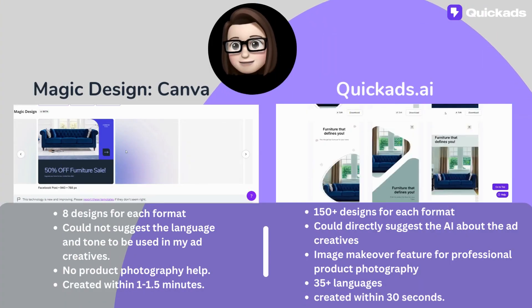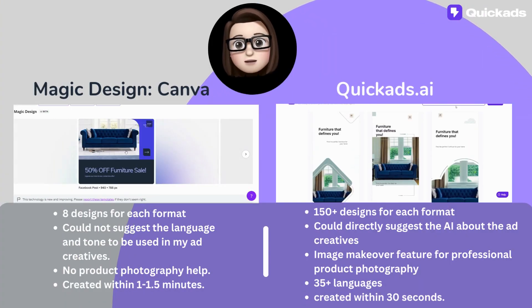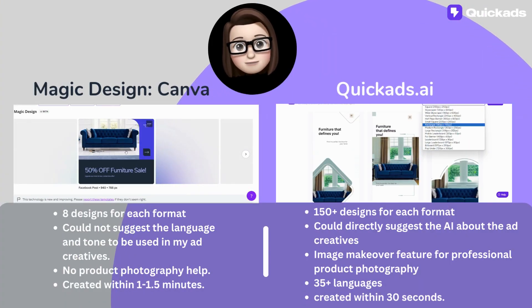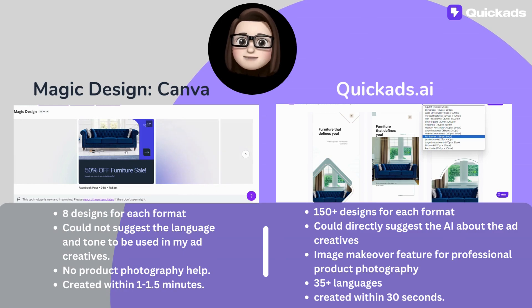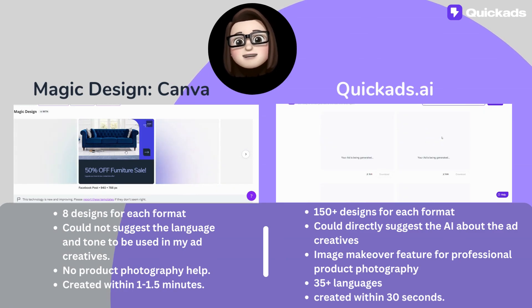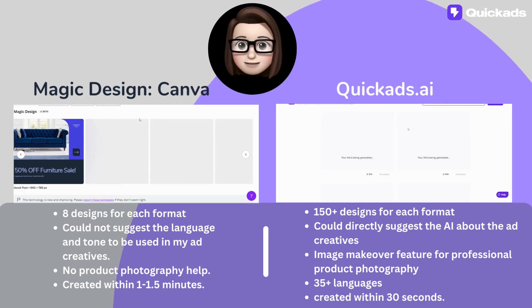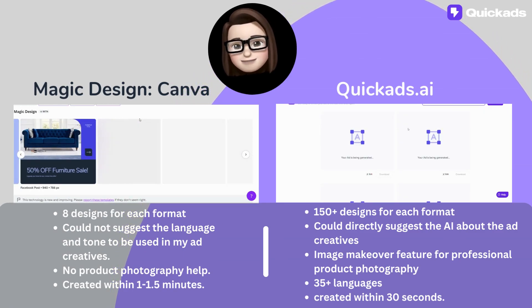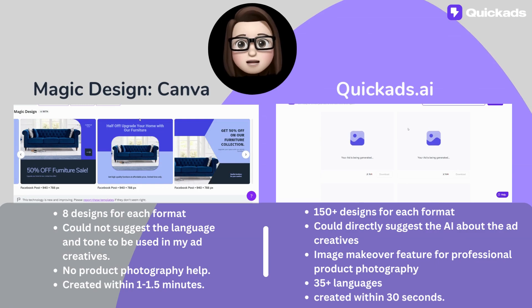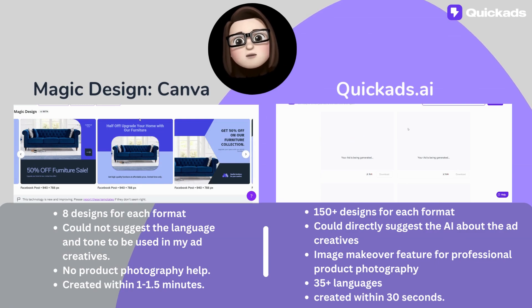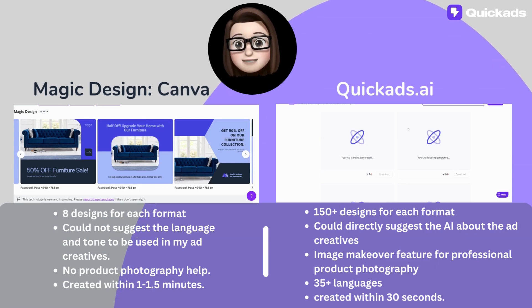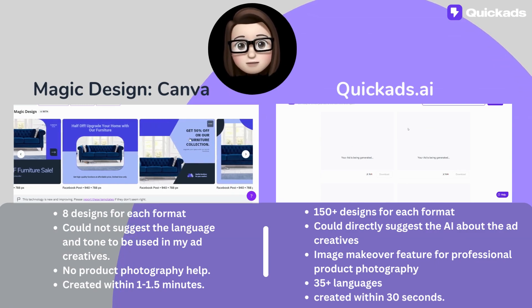Canva gave me 8 designs for each of the formats that it offers. Whereas Quick Ads.ai gave me more than 150 designs per format. That means I had more designs for each of the business platforms that I want to market my ad on.